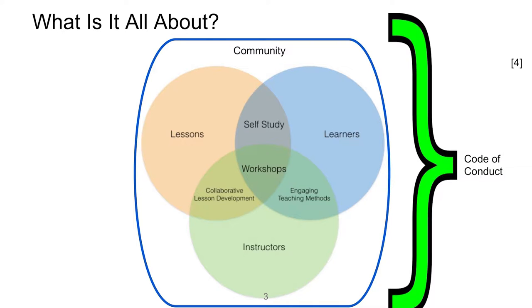So what are these communities all about? It really consists of a lot of things — it consists of workshops with a specific format. In the workshops they teach lessons that are developed by the community, and these lessons are published under the Creative Commons license. Every single person who contributes to the lessons gets recognition. The first version of the Software Carpentry lessons had 158 people on the publication, deposited in Zenodo. All the lessons are in GitHub, and if you make a contribution that's captured there and you get your acknowledgement.